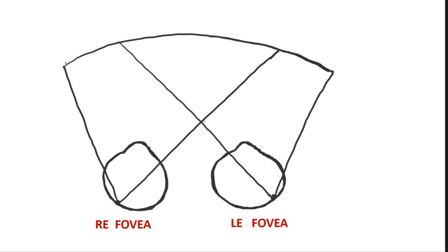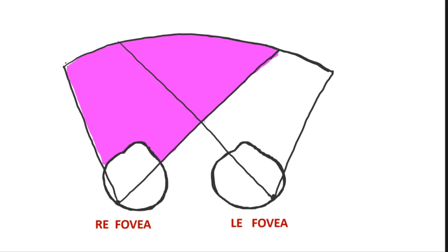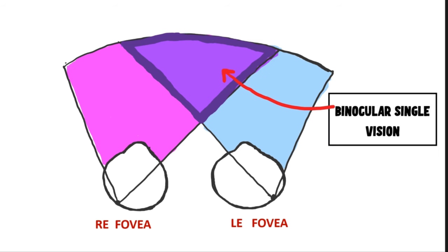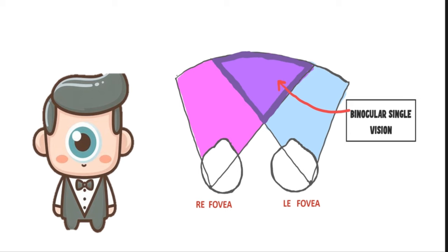In this diagram, the right eye fovea casts one field of vision shown in pink, and the left eye has another field of vision shown in blue. There is a significant overlap between the two, and this overlapping of the fields of vision of the two eyes is responsible for binocular single vision. When we use our two eyes simultaneously, we get a common image from both eyes superimposed on each other, as if there were a cyclopean eye at the center of our forehead.